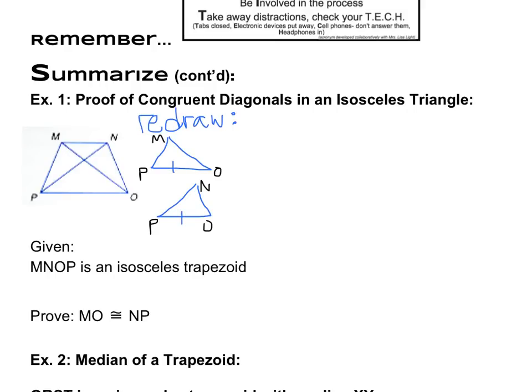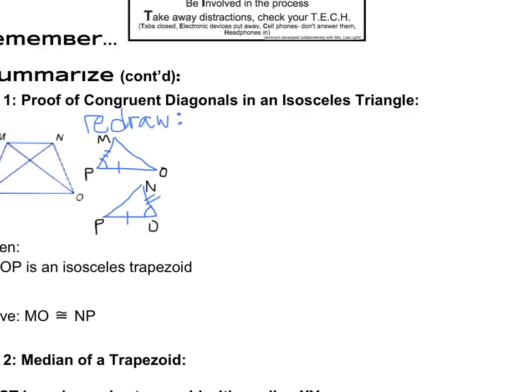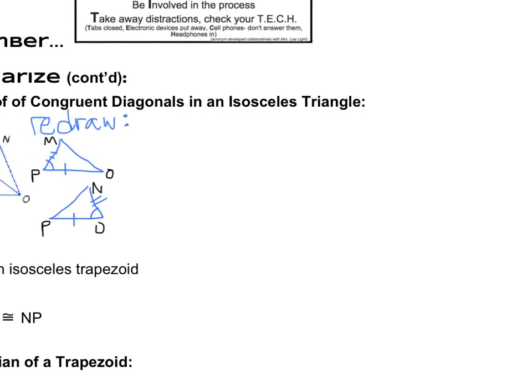So PO is going to overlap with PO, because it's the same exact length, just used twice. MP and NO, we can say, are congruent, because those are the legs, and it's an isosceles trapezoid, so we know those legs are the same. And we also know the base angles are the same there. So now we're going to take our redrawn diagrams, and we're going to construct a proof, two-column proof. Remember, we've got a statement column and a reason column.